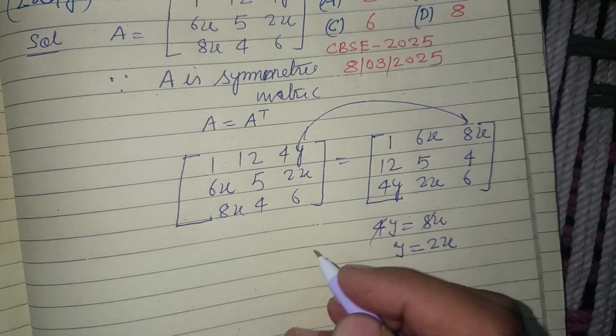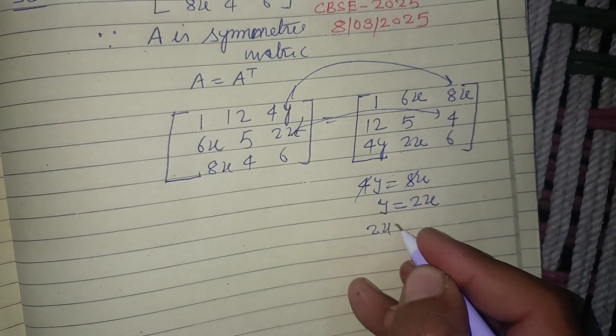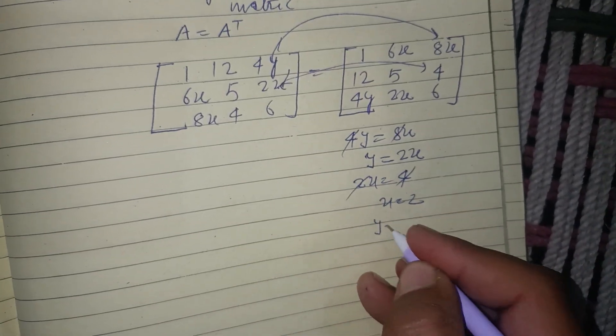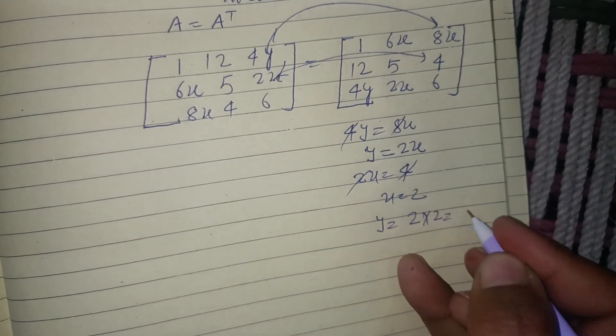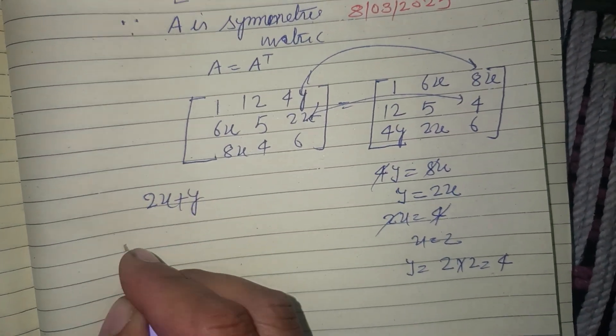if you compare this element, 2x equals 4, then x equals 2. If x equals 2, then y equals 2 times 2, that is 4. So the question is asking the value of 2x plus y.